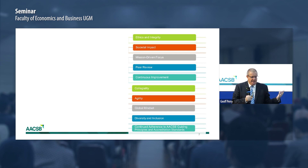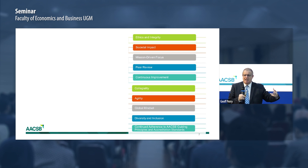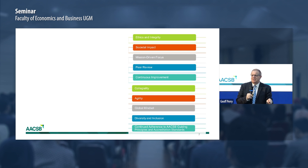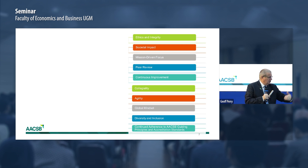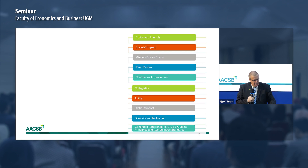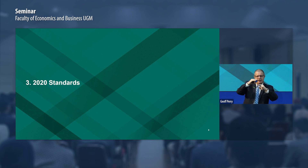The guiding principles cover ethics and integrity — what systems and processes do you have around academic honesty, complaints processes, and how you work with your schools. Societal impact. Mission driven — you have a mission where you identify your identity, and a vision where you identify where you're going, and that helps drive your decisions. Continuous improvement is a key idea under accreditation. You'll need to identify that you align with those principles, which you'll find in the standards.